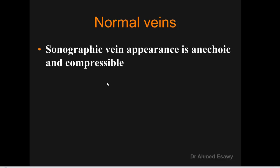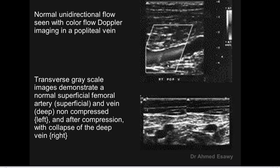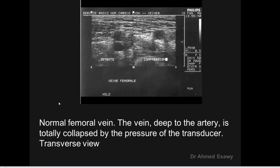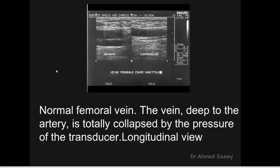Normal veins are anechoic and compressible in B-mode. Normal unidirectional flow demonstrated with color flow imaging. Transverse gray scale shows normal superficial femoral vein — uncompressed and after compression showing collapse. Normal common femoral vein: common femoral, superficial femoral, and deep femoral artery are identified. On compression, we find complete collapse by pressure — this is normal.